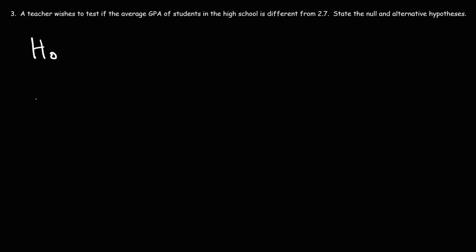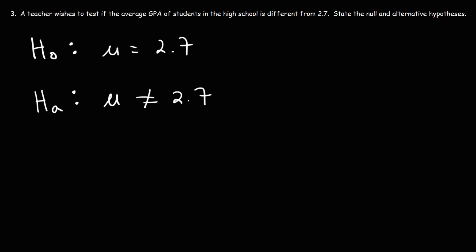Number three: a teacher wishes to test if the average GPA of students in the high school is different from 2.7. State the null and alternative hypotheses. For this one, it might be better to start with H sub A. The teacher wants to prove that the average GPA is different from 2.7. Since we're dealing with a mean, we use the symbol mu. The null hypothesis is that the mean equals 2.7, but the alternative hypothesis is that it's different — not 2.7.